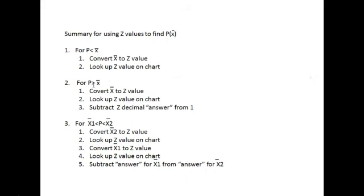If we want to find the probability greater than a given sampling mean, we convert that x̄ value to a z value, look it up on the chart, then subtract the answer from one.